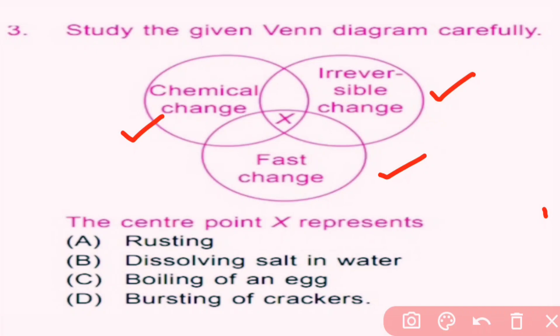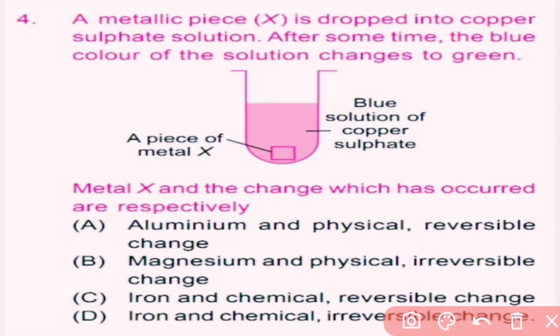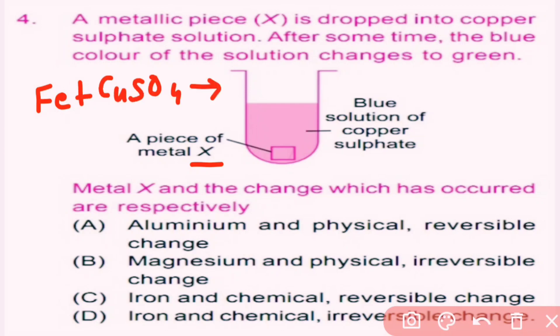Question number four: a metallic piece X is dropped into copper sulfate solution. After some time the blue color of solution changes to green. Metal X and the change which has occurred are respectively... Metal X is iron. Iron reacts with the blue copper sulfate solution to form a green iron sulfate solution. It is a chemical reaction and an irreversible change. So option D is the correct answer.